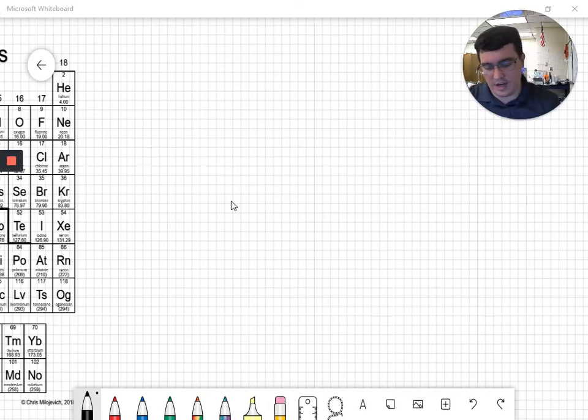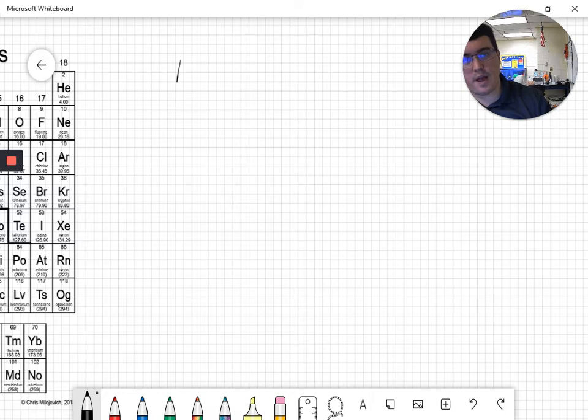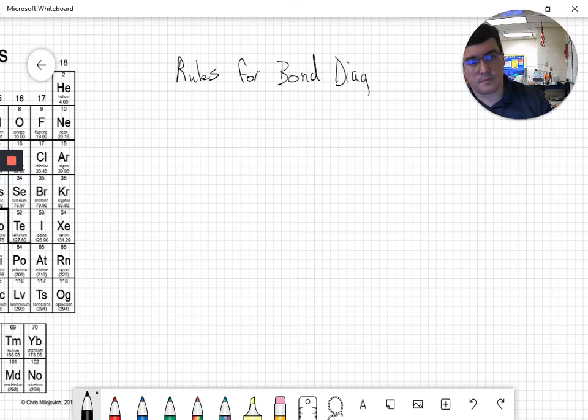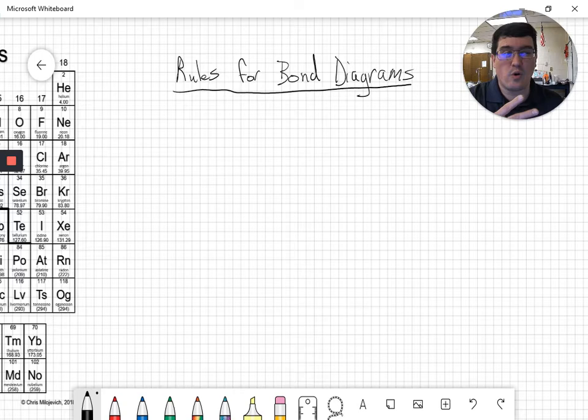All right, let's buckle in. We are now going to draw a bond diagram. So I'm going to walk you through my rules for drawing bond diagrams. There are actually going to be five rules. In this video, we're only going to go over the first four. And to do that, we need an example.